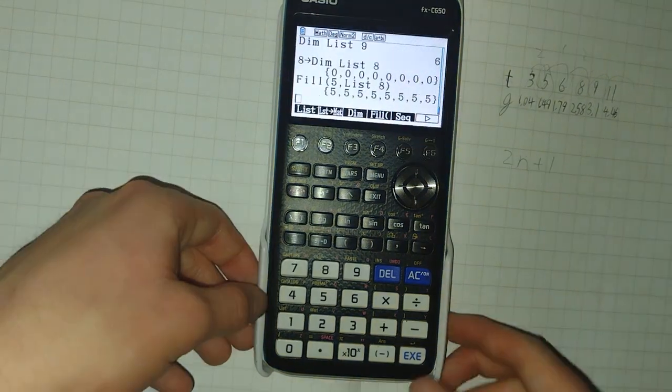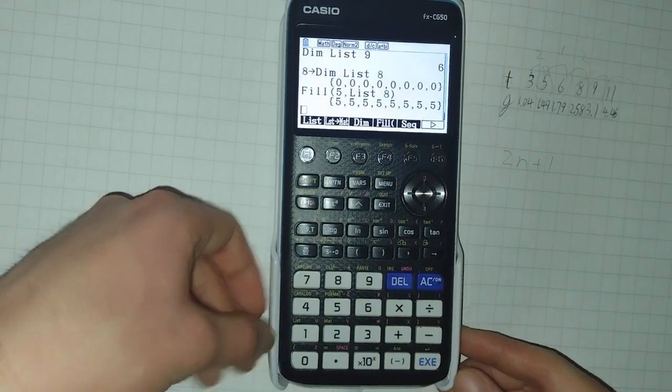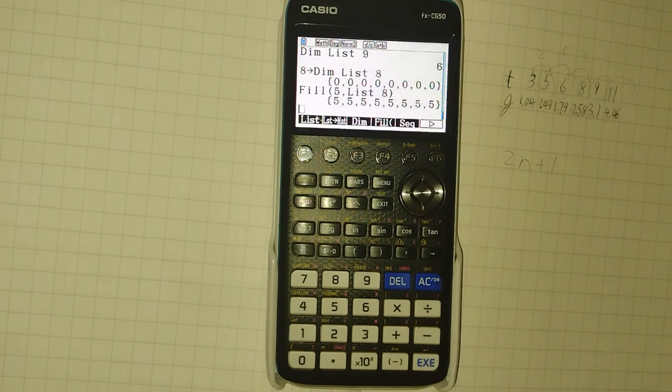And there we have it. That is an overview of working with lists on the Casio FX-CG50 graph and calculator. I hope you found this helpful. Thank you for watching.